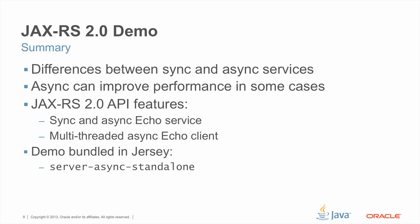In summary, we showed the difference between the sync and async services based on a particular environment where we have a fixed number of processing threads — in this case five. The performance of the async service was far superior because we didn't have all that waiting time, and we were able to use more of the CPU available to the system. In showing this demo, we had an opportunity to learn about some of the new features in the API, including the sync and async services as well as the async client API. This demo is part of Jersey, which is the reference implementation of JAXRS 2.0, so you can download it and run it. The name of the demo is server-async-standalone.